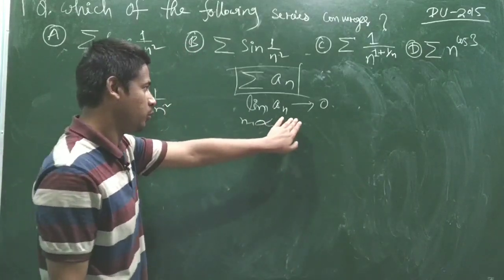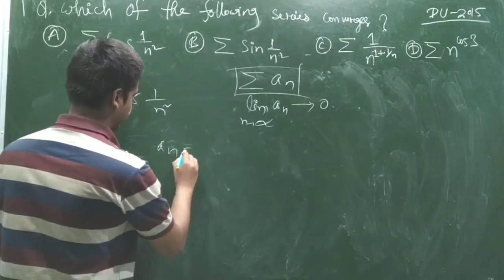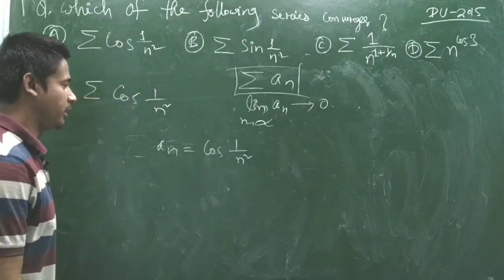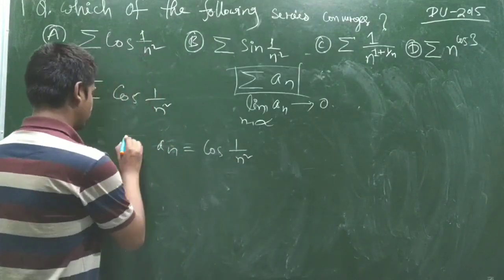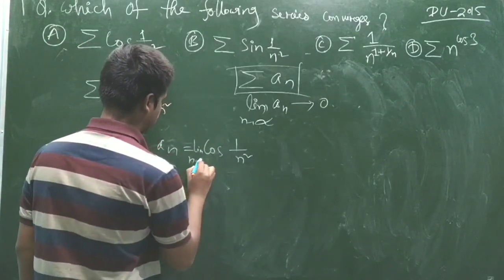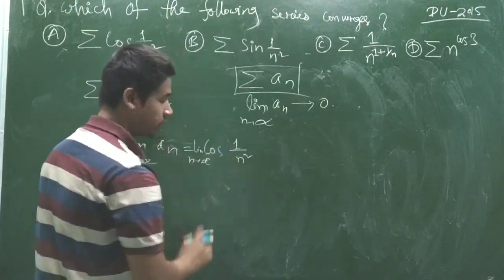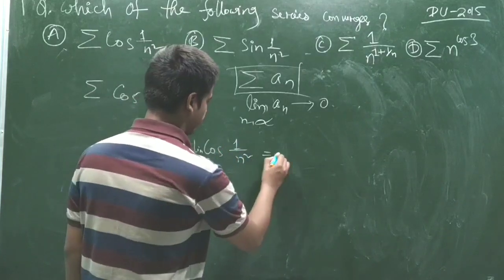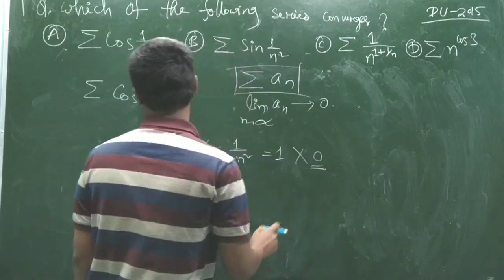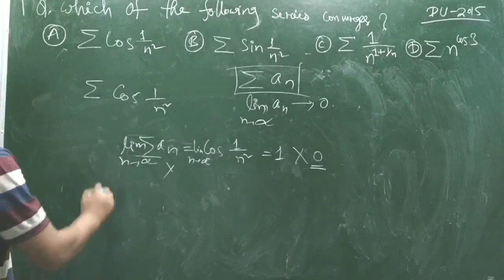Here aₙ = cos(1/n²). When n tends to infinity, 1/n² goes to 0, and cos(0) is equal to 1. So this limit is not equal to 0. Therefore, the summation of aₙ is not convergent — this series is not convergent.